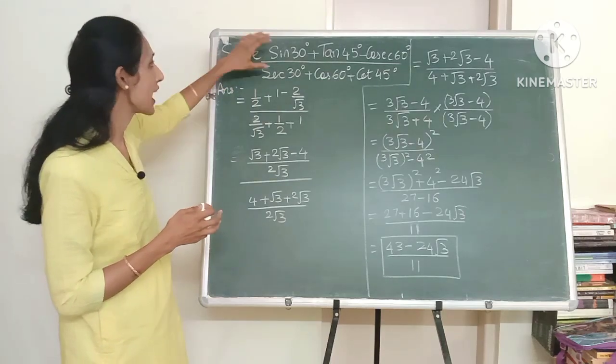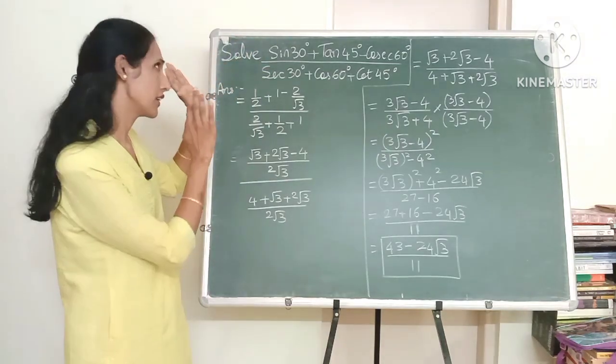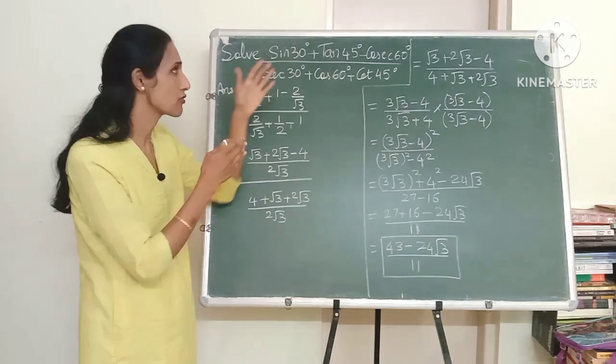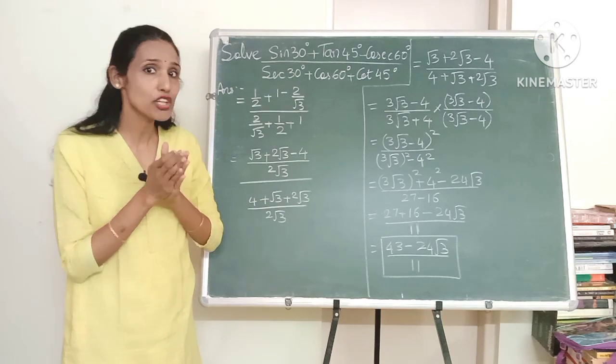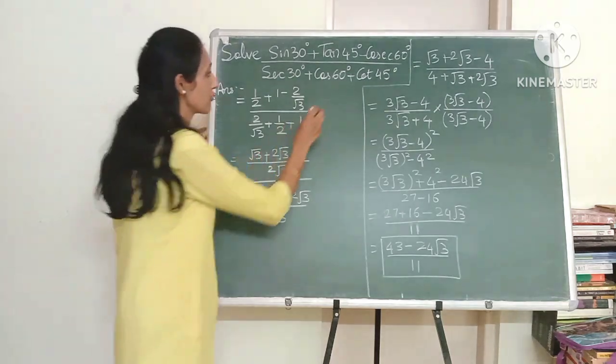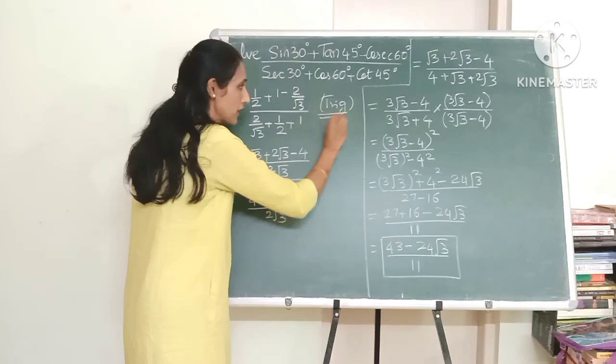Now in the first step I have simply substituted the trigonometric ratio values like sine 30 is half, cosec 60 is 2 by root 3. So what concepts have we used over here? Yes I have definitely used trigonometry concepts so let me write that over here.